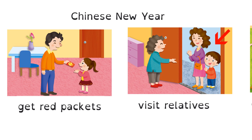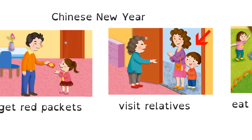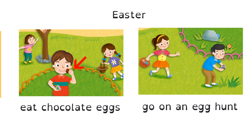Chinese New Year: Get red packets. Visit relatives. At Chinese New Year, children visit their relatives — for example, their grandparents, aunts and uncles. Easter: Eat chocolate eggs. Go on an egg hunt. At Easter, children go on an egg hunt. It is a game — children need to find chocolate eggs.